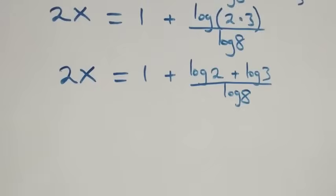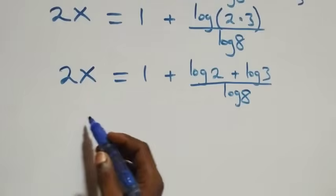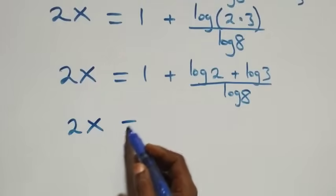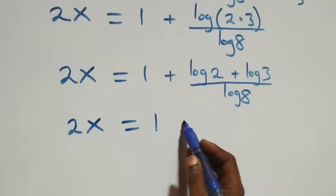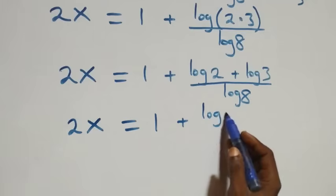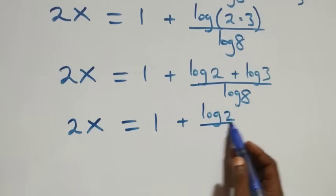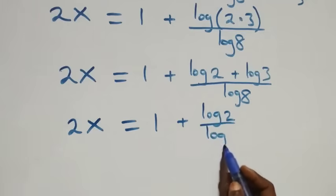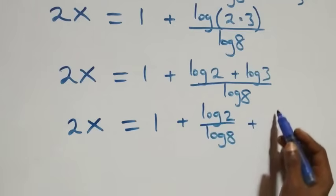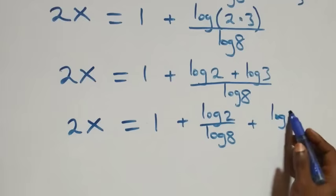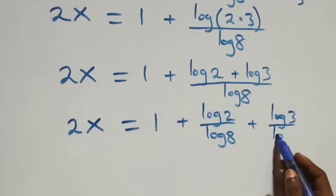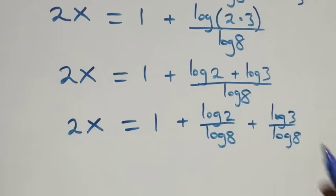We separate this into two fractions: 2x equals 1 plus log 2 over log 8 plus log 3 over log 8.